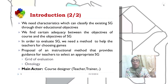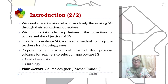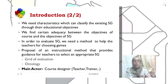In this work, we need characteristics which can classify existing serious games through their educational objectives. Also, we find certain adequacy between the objectives of a course and the objectives of a serious game. In order to evaluate serious games, we need a method to help teachers in choosing games. Our objective is to provide an instructional method that provides guidance for teachers to select an appropriate serious game in two steps.